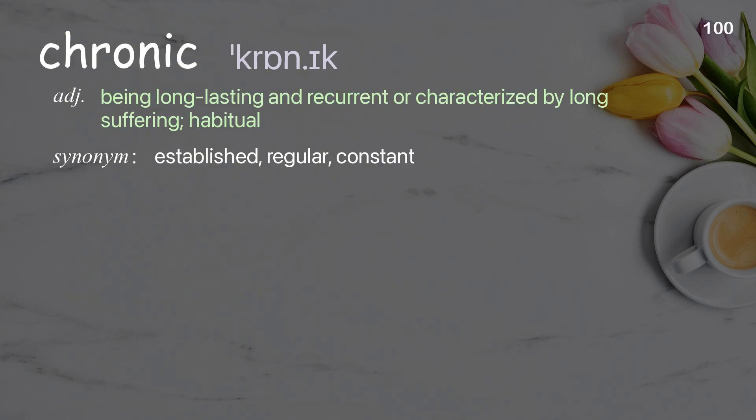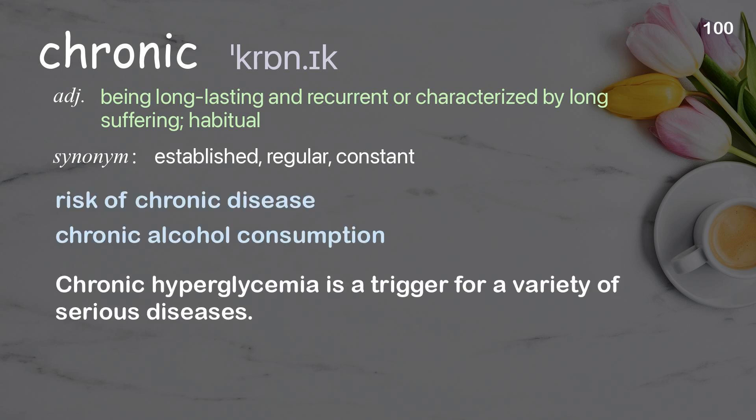Chronic: being long-lasting and recurrent, or characterized by long-suffering; habitual. Examples: risk of chronic disease, chronic alcohol consumption. Chronic hyperglycemia is a trigger for a variety of serious diseases.